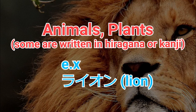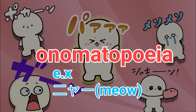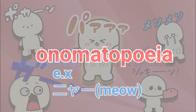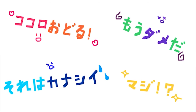Animals and plants — some are written in hiragana or kanji. For example, lion. And onomatopoeia — for example, ニャー (nya). Other than those, if you want to use a specific word impressively in your written sentence, you could express it using katakana.